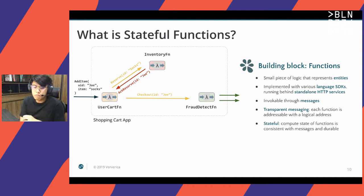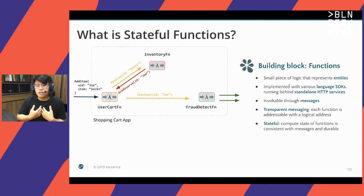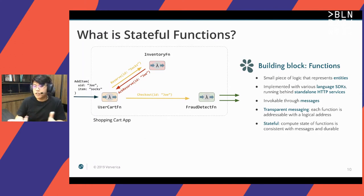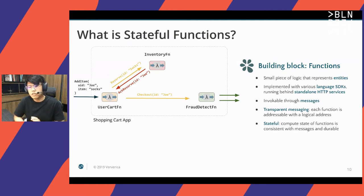The computation here is stateful. For example, the user cart state is what items are already reserved in a user's cart. For the inventory function, the state is how many of each inventory item remains. For the fraud detection function, state could be the history of user activity. We all know that handling distributed applications with state gets much more complex than stateless applications.